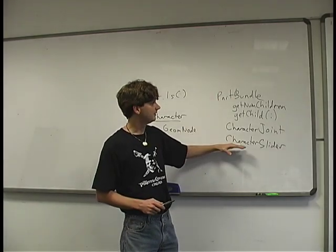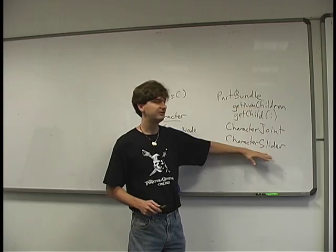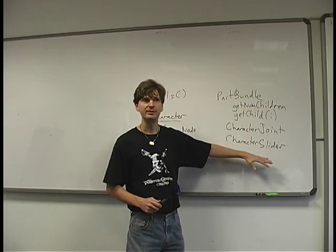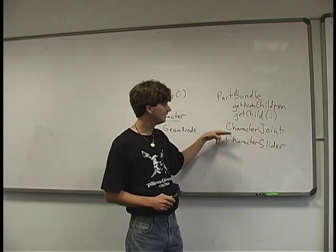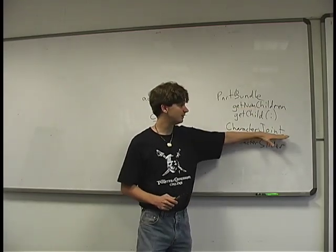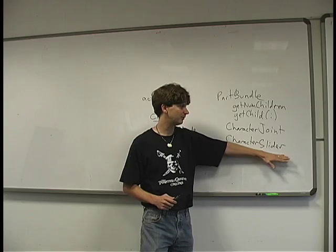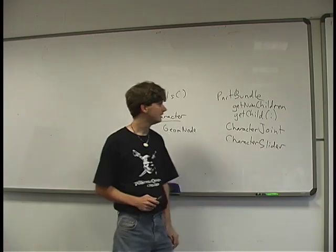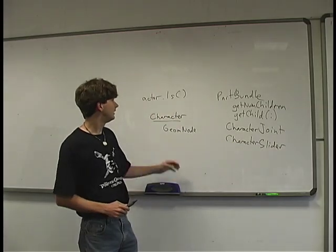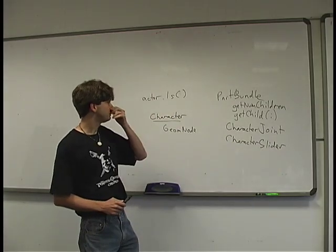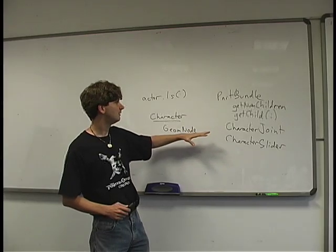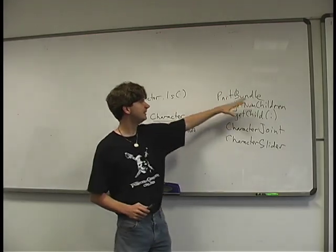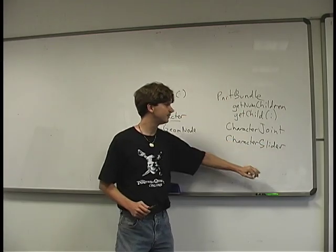As far as the Character is concerned, it's just a hierarchy of joints and sliders. Every joint stores a matrix; every slider stores a floating-point number. That's basically what's inside the PartBundle — a linear hierarchy of these things.